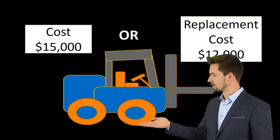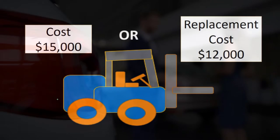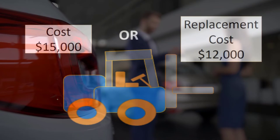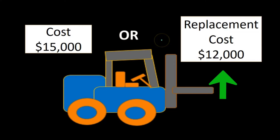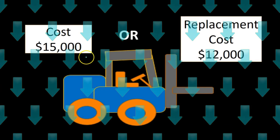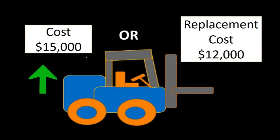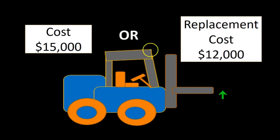For example, if we bought inventory — this forklift being inventory to us, something we purchase and sell in the course of business — if the cost of it was $15,000 and we think the replacement cost is $12,000, then we believe it has gone down in value. We shouldn't keep it on the books at $15,000; we should mark it down to the replacement value of $12,000.